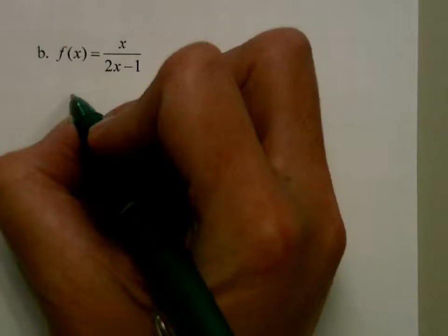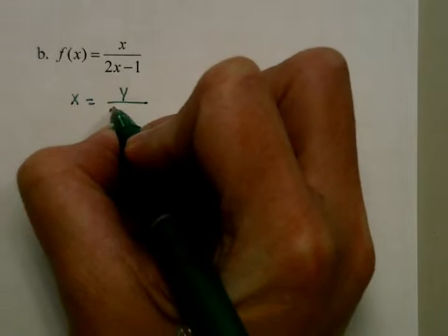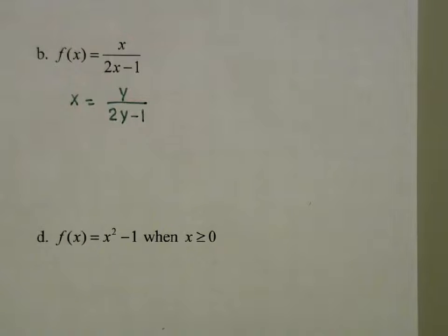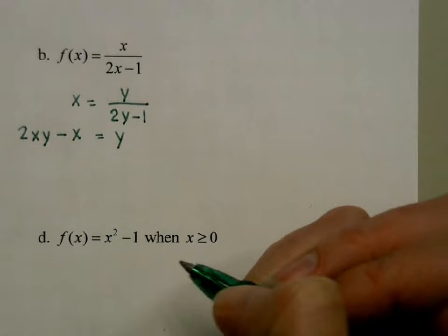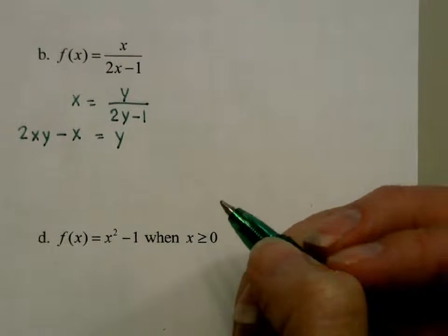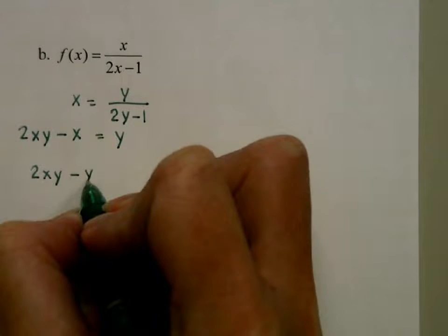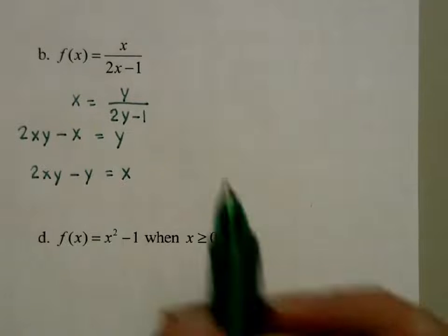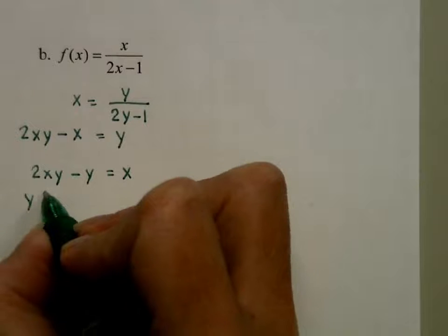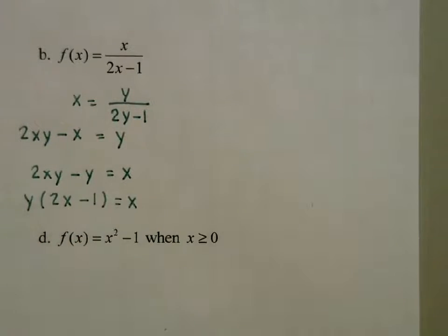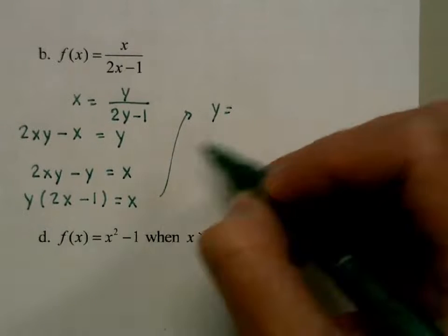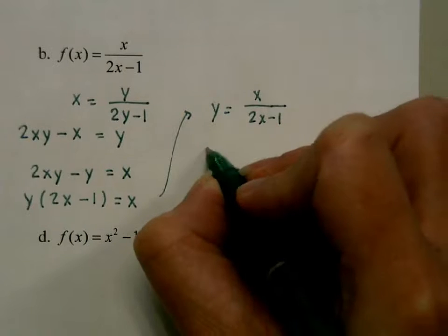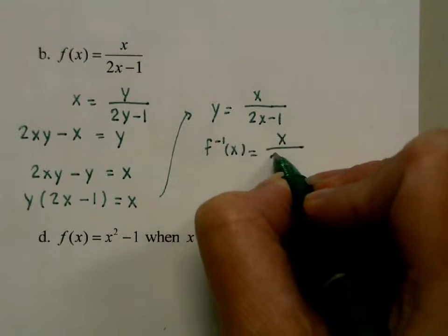We're going to switch x and y. The issue here is I have several y's, but that's okay. First I'm going to multiply this over. We're going to have 2xy minus x equals y. Then I'm going to put everything that has a y on one side, and everything that doesn't have a y on the other side. Now I have y's in both of these, so I'm going to factor that out. That's how I can get it, so I just have one y. So now I'm going to divide by that, and that's my inverse. My inverse is x/(2x - 1), which actually happened to be the equation itself.